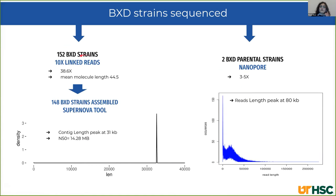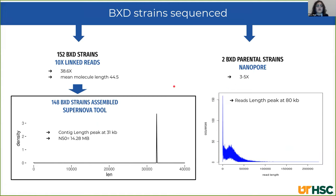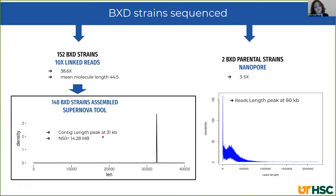We have 152 BXD strains of mice obtained by 10x linked-read technology, and 2 BXD parental strains obtained by nanopore sequencing with very low coverage. To build a pangenome, we used 148 BXD strains assembled with the Supernova tool. This is the distribution of contig lengths — the contig peak is at 31 kilobases. So this is a very challenging task to build a pangenome with such a short contig peak.